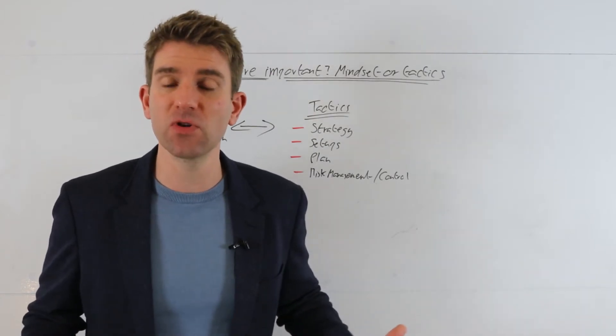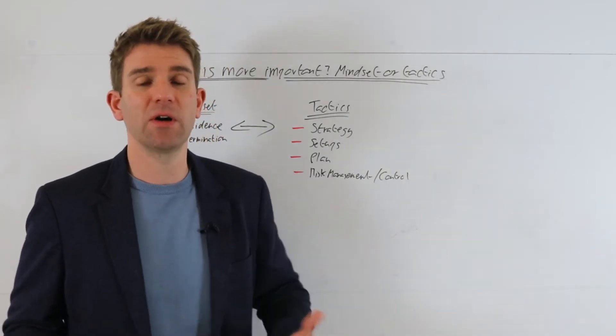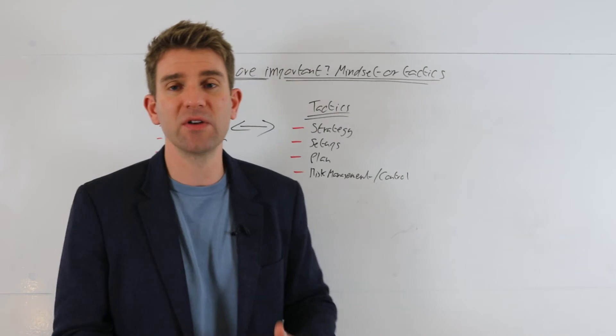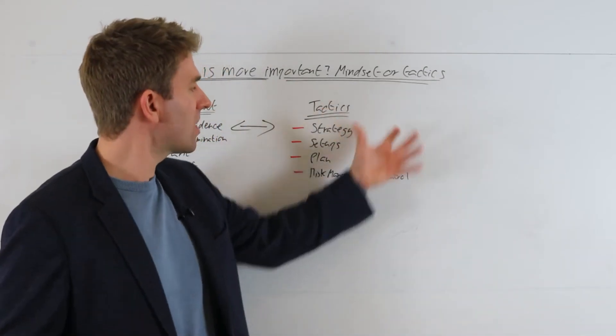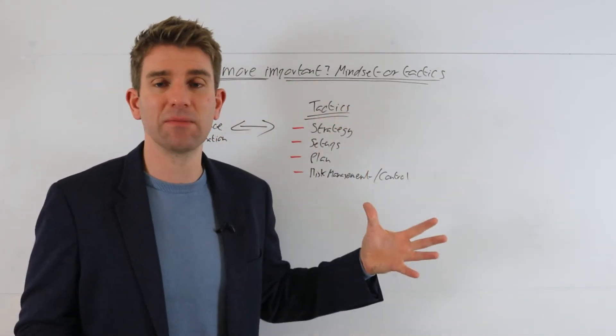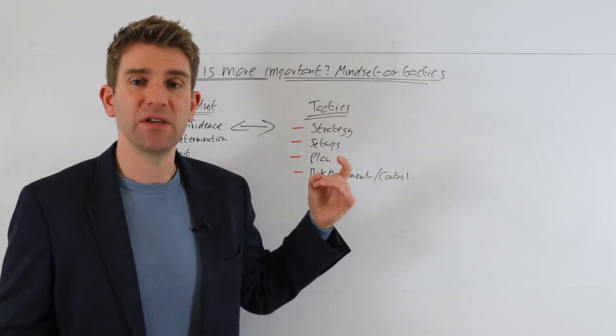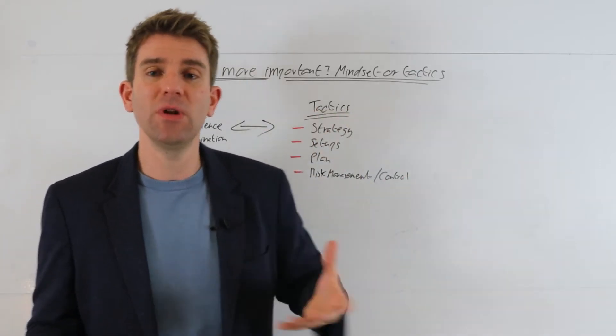Because of course you can have the best strategy in the world, but if your risk management is off and you're losing the trade, you end up wiping out four or five good winners and it doesn't make any sense. So this is all kind of some of the things under the tactics umbrella and you must have these.